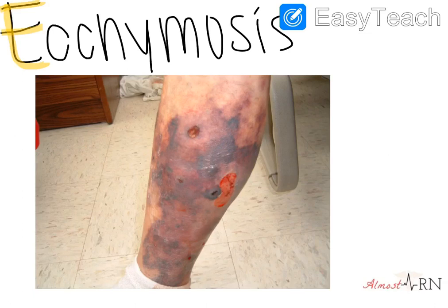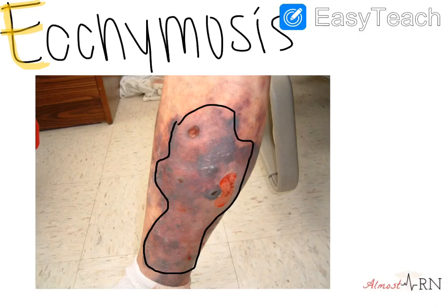Next is ecchymosis. Ecchymosis, in its basic form, is basically just bruising. And this picture is really good because all of this dark discoloration of the skin would all be considered ecchymosis.